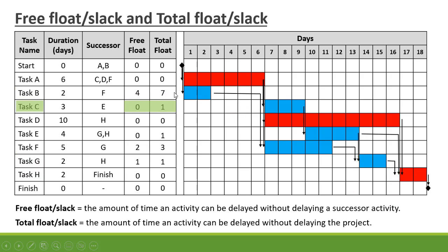Now let's look at Task C. C is connected to E — there is 0 free float. However, for the total float: C is connected to E, E is connected to G, and G is connected to H. There is 1 day of float between G and H, so the total float on Task C is 1 day.